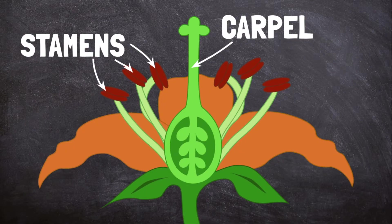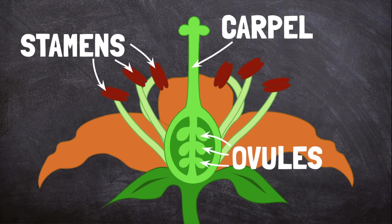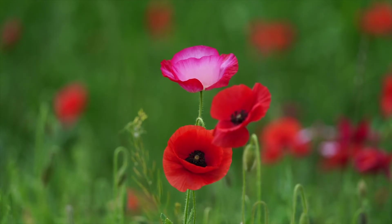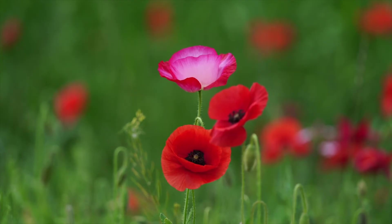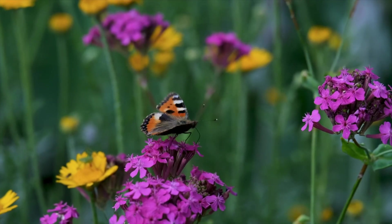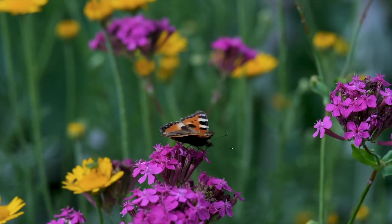The carpels make ovules. When pollen reaches a new flower, it attaches to the ovule to make seeds that will grow into new plants. Flowers also have petals. Petals are often bright and colorful to attract insects that will help to pollinate the plant.